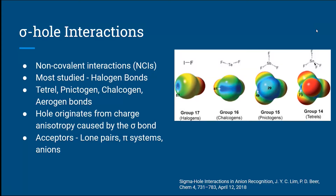They are a class of non-covalent interactions that can rival the strength of hydrogen bonds and are becoming more and more important in research nowadays. The most well-known one is halogen bonding, but the same concepts can be applied to chalcogens, which is the oxygen group, pnictogens — the nitrogen group — tetrels, which is the carbon group, and they're even finding them in the aerogen group, which is the noble gases.